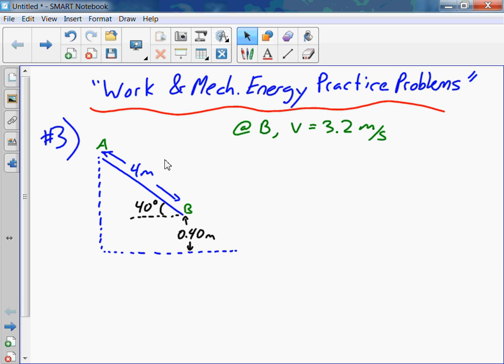So we've got to figure out the difference in total energy at point A and compare it between points A and B. So if we look at point A, what types of energy does Lucy have? Gravitational potential. Does she have any kinetic? No. Okay, great.